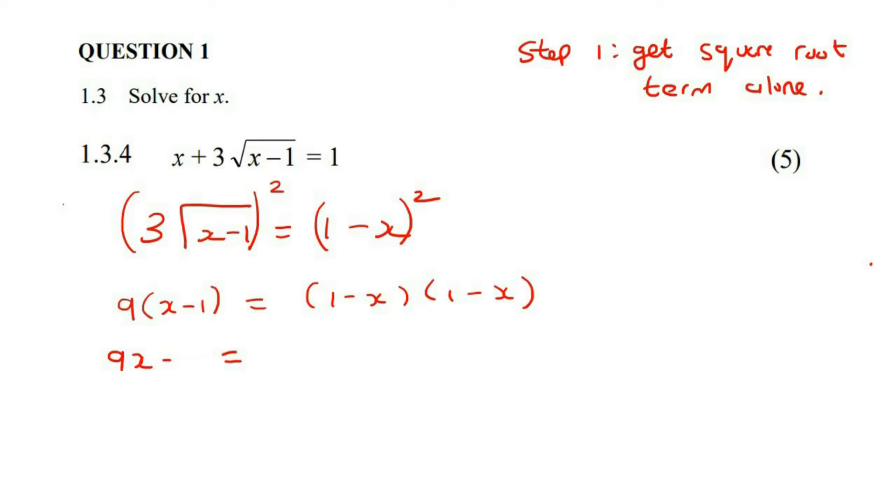So 9x minus 9 is equal to, okay, now I'm going to multiply this out. So it becomes 1 and then minus x minus x and then plus x squared. So that becomes minus 2x eventually. You might want to just make sure that you agree with me on that.